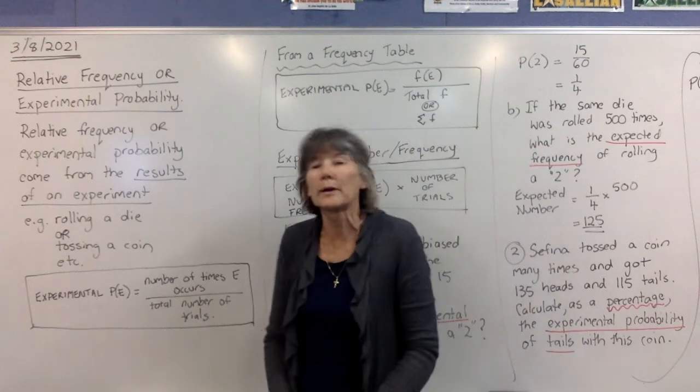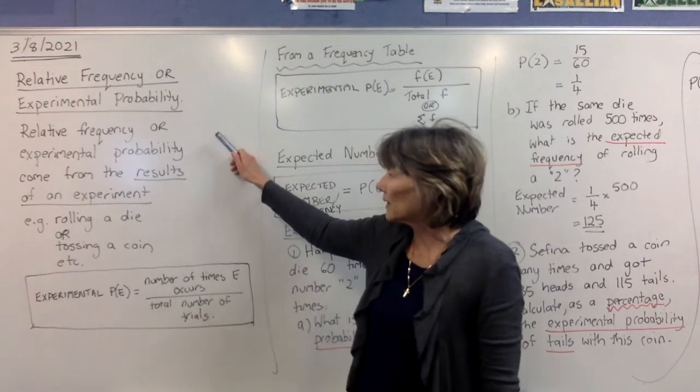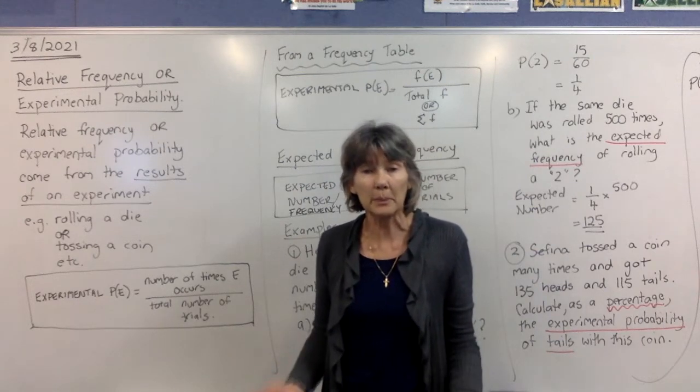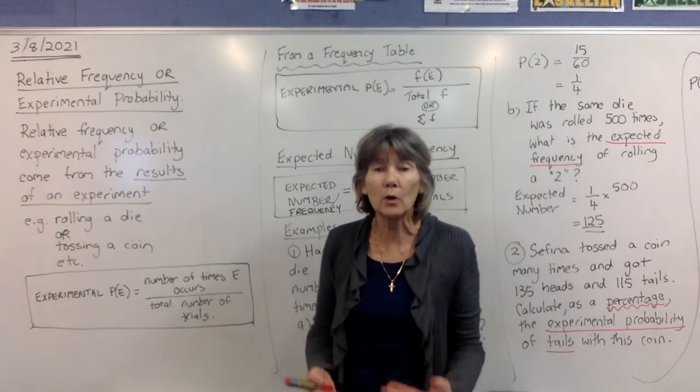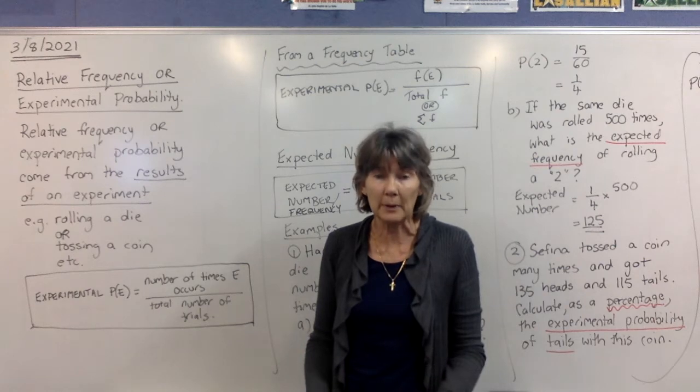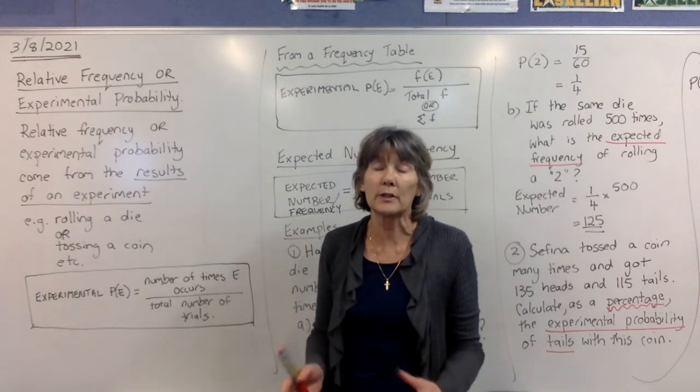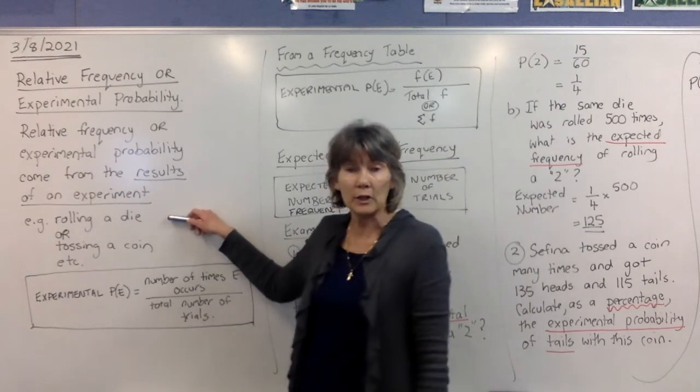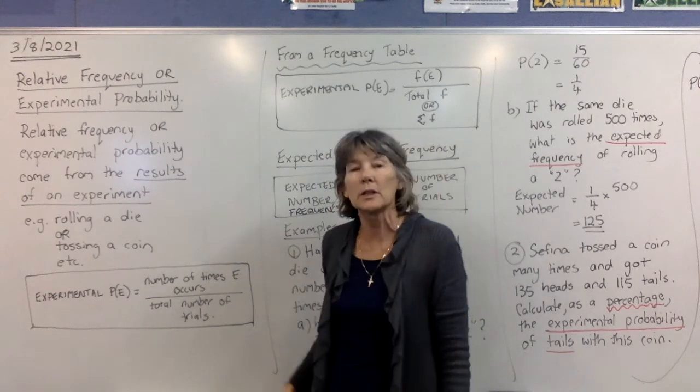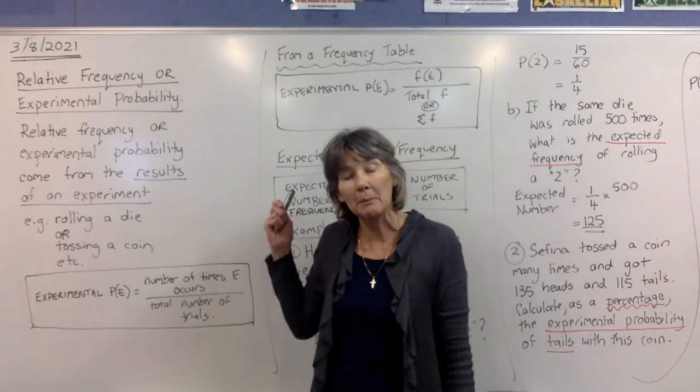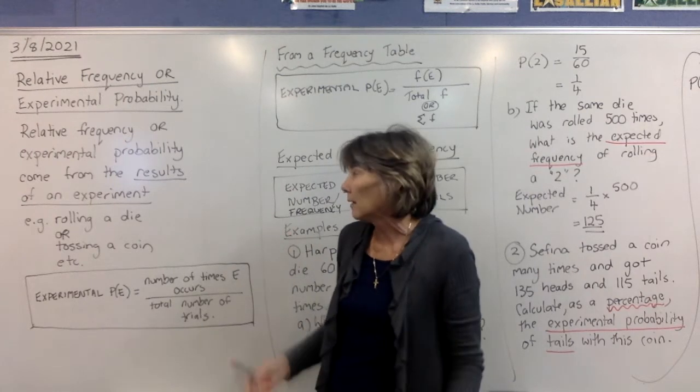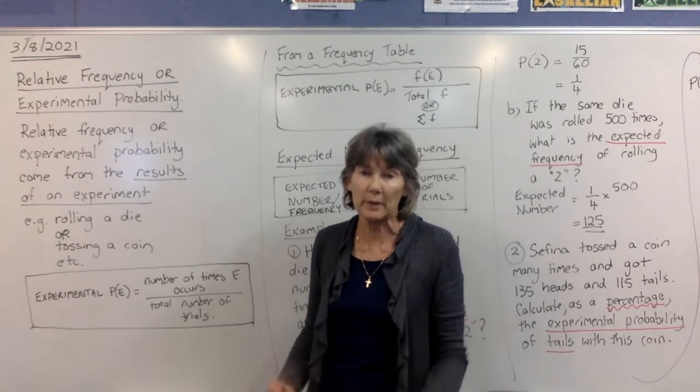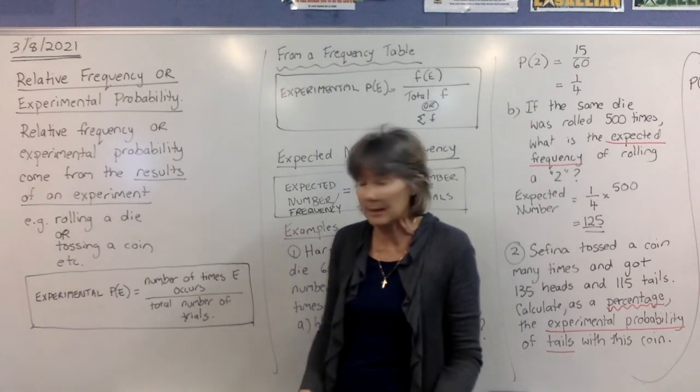So if we have a look at what it actually means, both of these things come from the results of an experiment. Some sort of an experiment will be conducted. You'll have all the statistics from that experiment, and you then analyze those to get your probabilities. We could be rolling a die, or tossing a coin, or drawing a marble out of a bag. It could be anything. That's what we're looking at as our experiment, and then it's the numbers that we get as our results that we then have a look at for our answers.